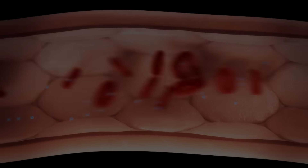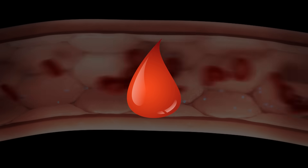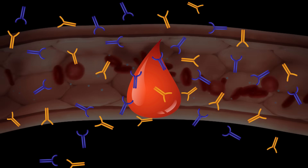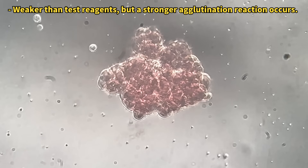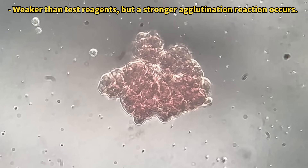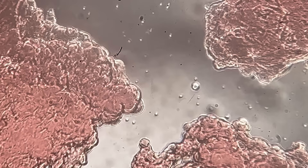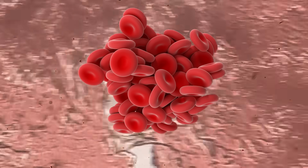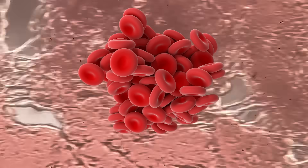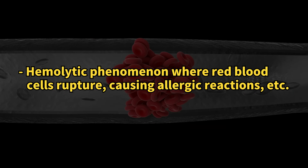However, when foreign blood actually enters the body, the immune system reacts vigorously, leading to a strong agglutination reaction. Hence, if transfused incorrectly, this strong reaction can cause red blood cells to clump together, clogging capillaries and creating serious complications.